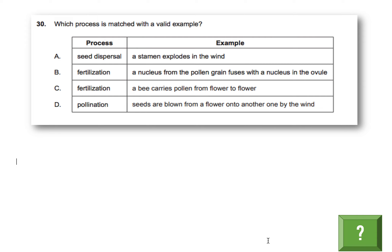Which process is matched with a valid example? Option A is seed dispersal, and the example given is a stamen explodes in the wind. We know seeds can get dispersed by various mechanisms — for example, getting stuck on the fur of an animal or getting moved by wind. But this example is not correct.